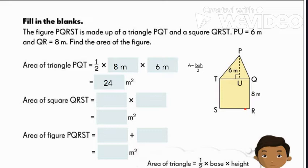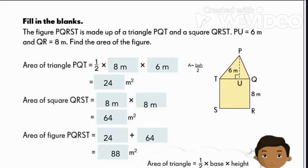We learned that to get the area of the square, we simply multiply side by itself, or side times side. So since one side is equal to 8 meters, then multiplying it by 8 meters, this will give us an area of 64 square meters. Now we are ready to combine the areas of both shapes. So combining the two, we got 24 square meters plus 64 square meters, this will give us 88 square meters. So the area of the figure PQRST is equal to 88 square meters.